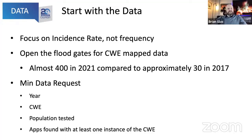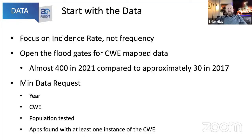For the data call we asked: for a given year and a given CWE, tell us how many applications you tested, what the population was, and how many apps had at least one instance of that CWE. We also asked for metadata: what kind of testing — DAST, SAST, human — what language, what industry vertical, and so on. Beyond the base set we got varied responses depending on how each organization stored data, but at minimum we needed that core level of data to compare results.